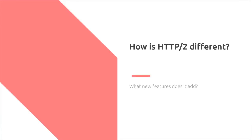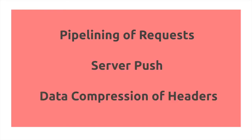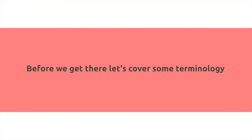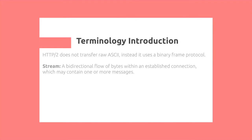So how is HTTP/2 different, and what features does it add? We have pipelining of requests, server push, and data compression of headers, along with more. Before getting into those, let's cover some basic terminology. HTTP 2.0 does not transfer raw ASCII; instead it uses a binary framing protocol.